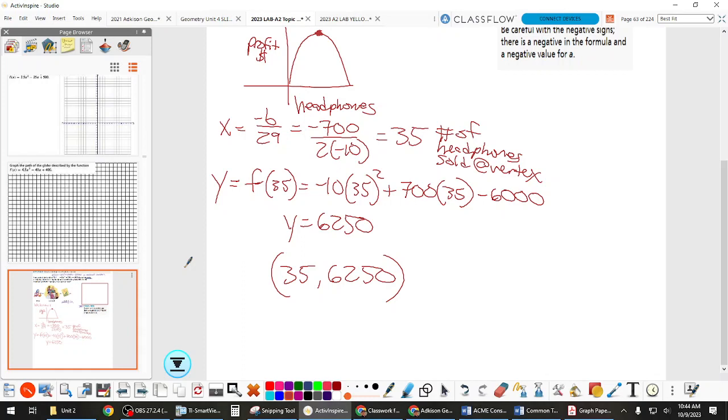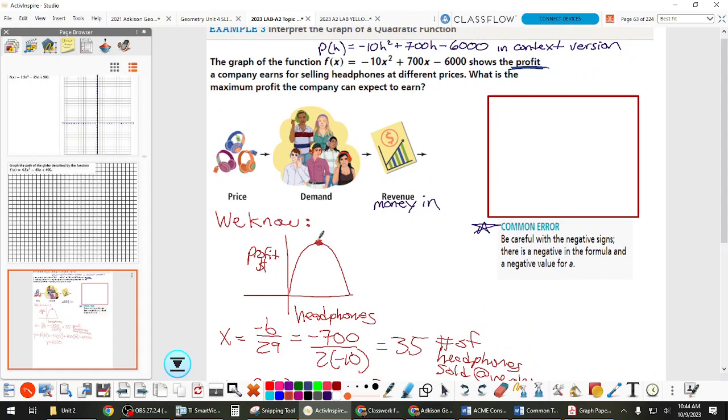Now we know the answer to both things we wanted to know, which was, what is the maximum profit we can make? And, probably for this company, also just as important as how many headphones do we need to sell in order to get there. This is a version of what people in math call optimization. Optimize means get the very best case scenario. So, if this function rule indeed did describe their profit margin, then they would want to try to sell 35 headphones. Do you see how it's the same math as what we've been doing, even for graphing? Like, find the vertex. It's the same math. It's just now buried down in here in the story.